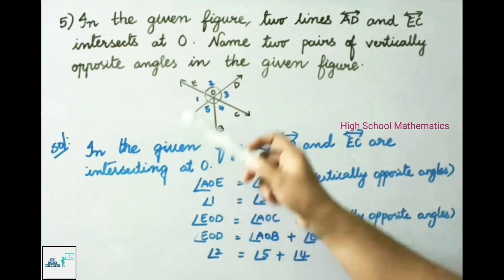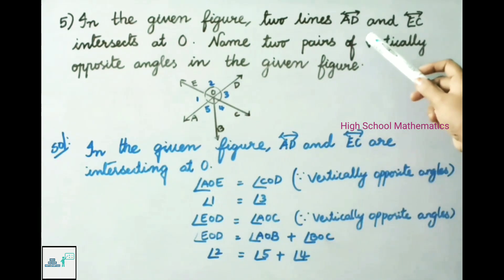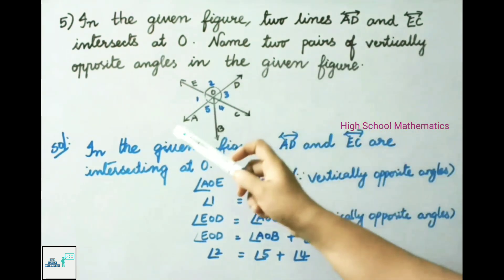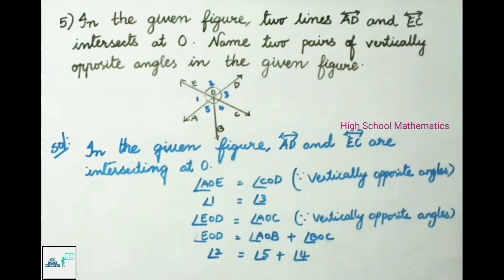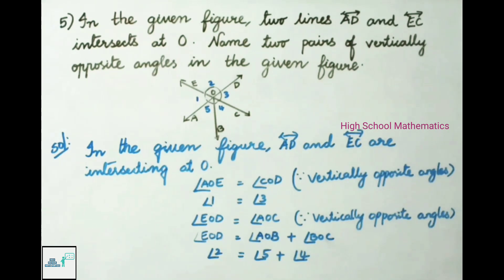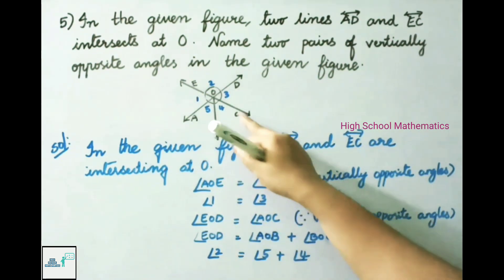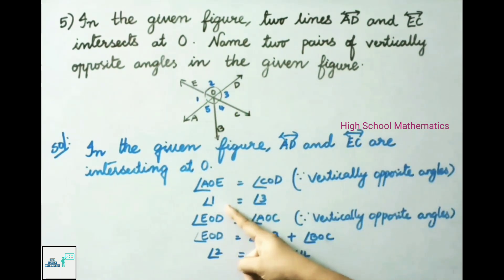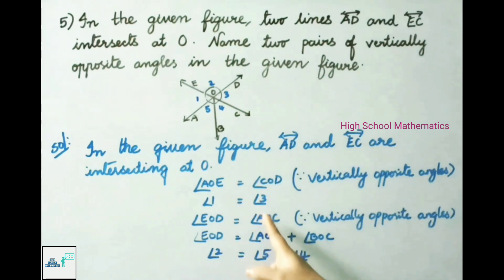Question number 5: In the given figure, two lines AD and EC intersect at point O. Name two pairs of vertically opposite angles. From the figure, angle AOE and angle COD are equal because both are vertically opposite angles. Angle AOE is angle 1, and angle COD is angle 3. Therefore, angle 1 is equal to angle 3.